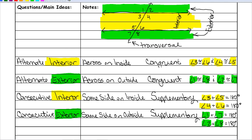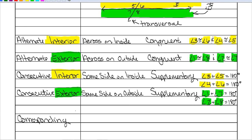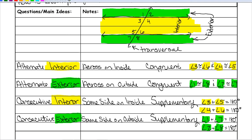The last set of angle pairs are called corresponding angles. Corresponding angles are on the same side of the transversal but skip over an angle — we call them same side skip. These angles are congruent. The pairs are: 1 and 5, 3 and 7, 2 and 6, and 4 and 8. Those are all corresponding angles.